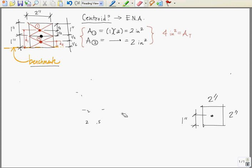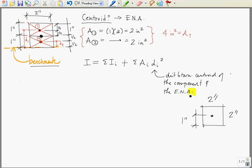Now for the next part of the problem, we're going to calculate the moment of inertia. And the formula for moment of inertia is the sum of the individual moment of inertia of the parts, plus the sum of the areas times the distance squared. And this is a different distance than when you calculate the centroid. This is the distance between the centroid of the component and the elastic neutral axis.